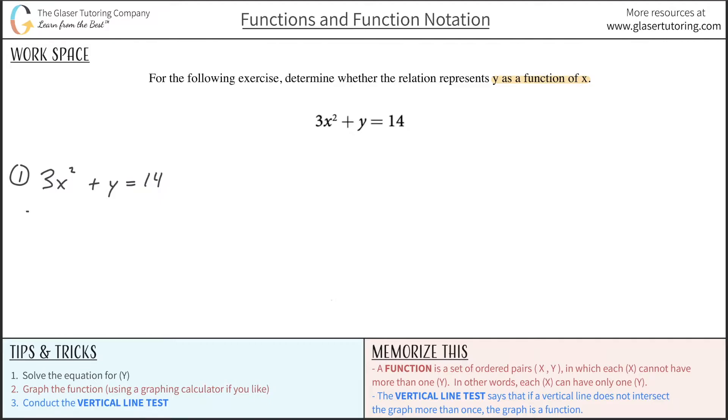To solve this thing for y, we just have to then subtract the 3x squared from both sides. And now that simply gives us the formula of y is equal to negative 3x squared plus 14.